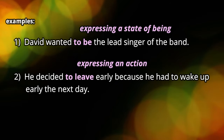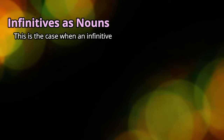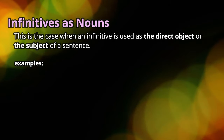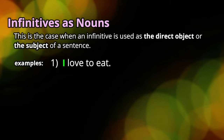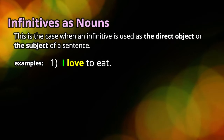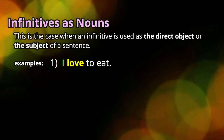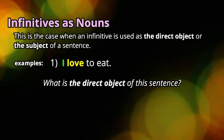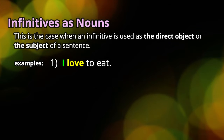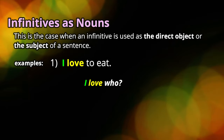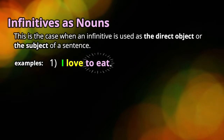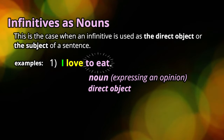Now, let's look at examples of when an infinitive is used as a noun. This usually occurs when the infinitive is used as the direct object or the subject of a sentence. For example: I love to eat. 'I' is the subject of the sentence and 'love' is the verb. To find the direct object, we ask 'who or what?' — I love what? I love to eat. So we can see that an infinitive functions as a noun when it's the direct object of a sentence.